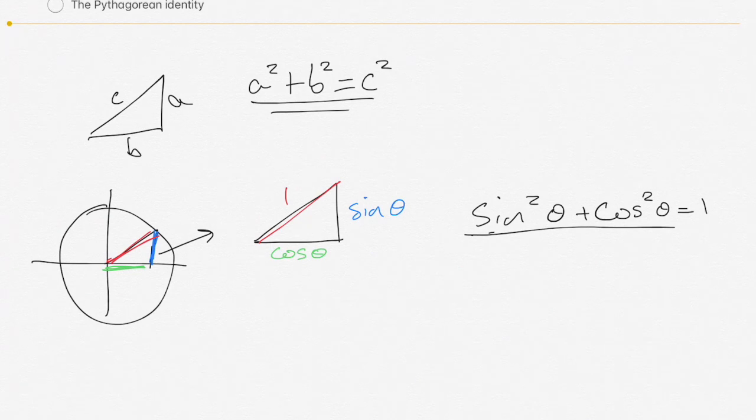This is given to you on the formula sheet for this topic. So on your formula sheet if you have a look at the second page down under the heading of basic identities, this is the first one given to you except it doesn't actually give it in terms of theta, it gives it in terms of x.